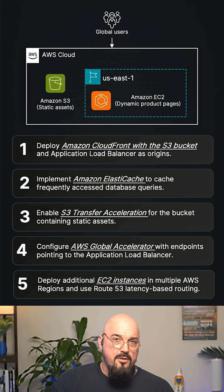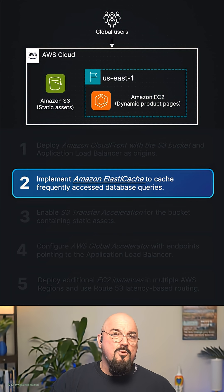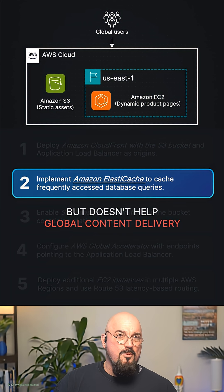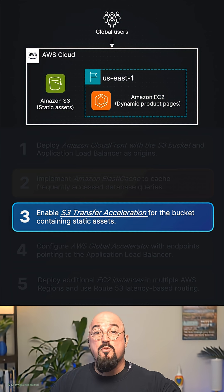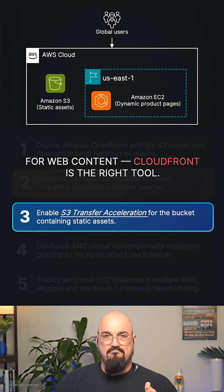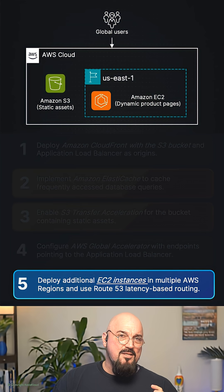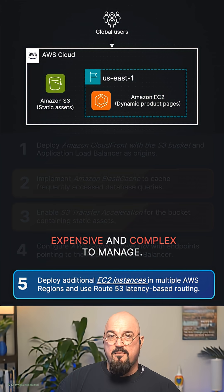Our hints are global users, dynamic content, and static content — we need solutions for both. ElastiCache will improve database performance but doesn't really help with global delivery. S3 Transfer Acceleration speeds up uploads and downloads to S3 directly, but for serving web content to browsers, CloudFront is the right service. EC2 in multiple regions works, but it's expensive and complex to manage.